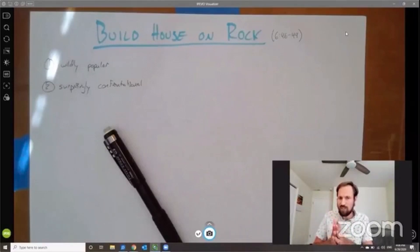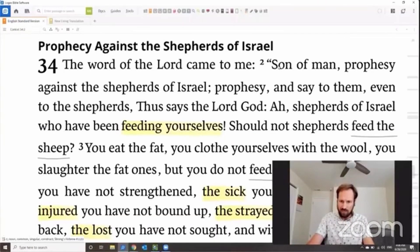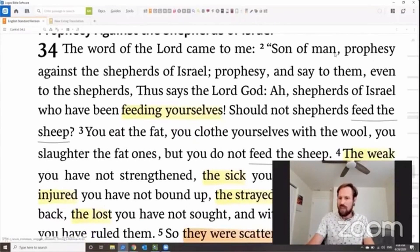Now, the shepherds of Israel are those who have spiritual authority over the people of Israel. They are the religious leaders, and look how Ezekiel describes these leaders. Son of man, God says to Ezekiel, prophesy against the shepherds of Israel. Prophesy, say to them, even to the shepherds.